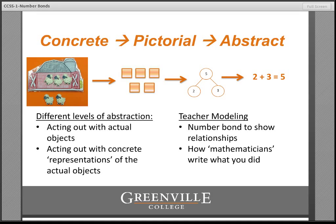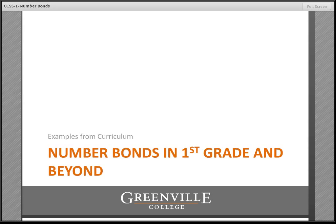Throughout this instructional sequence, your goal is not on each individual component so much as on the connection back and forth — being able to point to things and say, 'How is that represented in our original situation?' So when they look at 2 plus 3 equals 5, what do each of those components mean? Now that you have an introductory concept for number bonds, we're going to take a look at some ways they can be used in first grade and even a few examples of how they can be used beyond first grade, so you see their potential as a representation that can grow with a child's mathematical development.